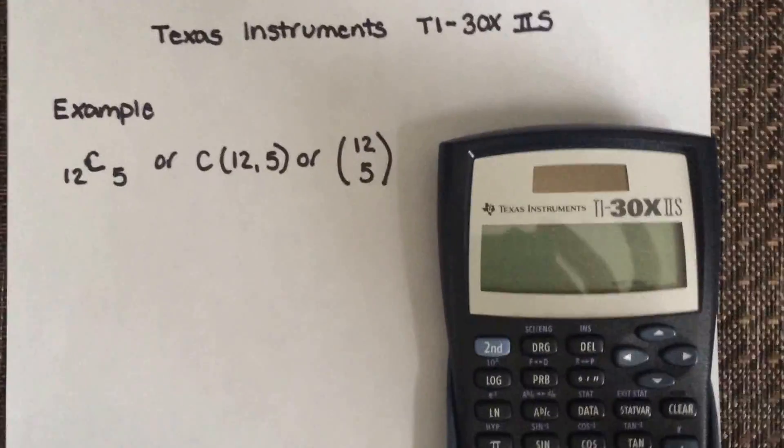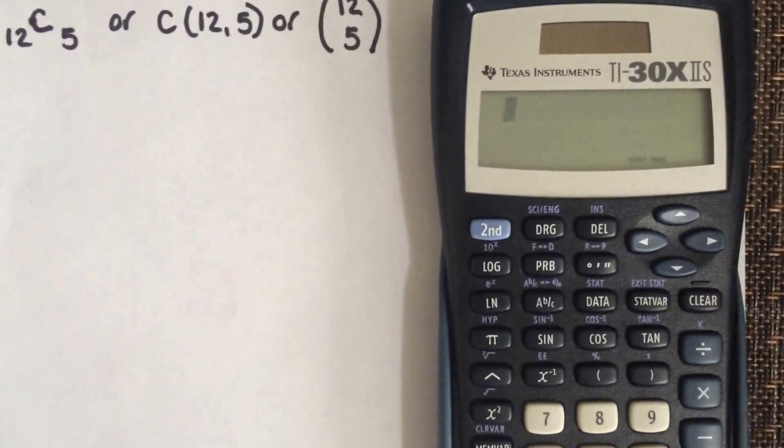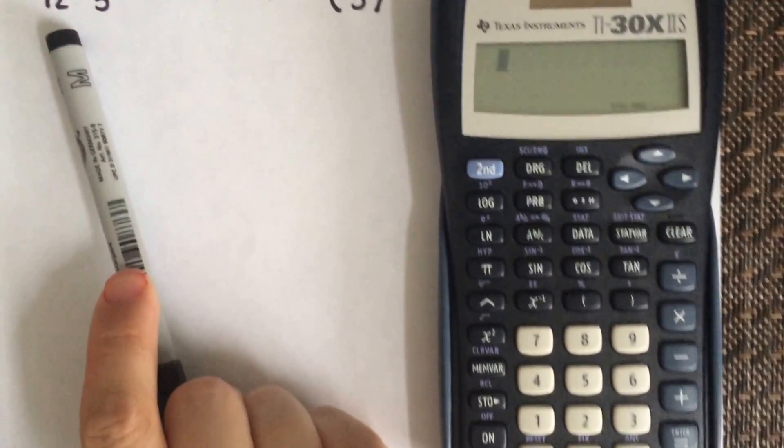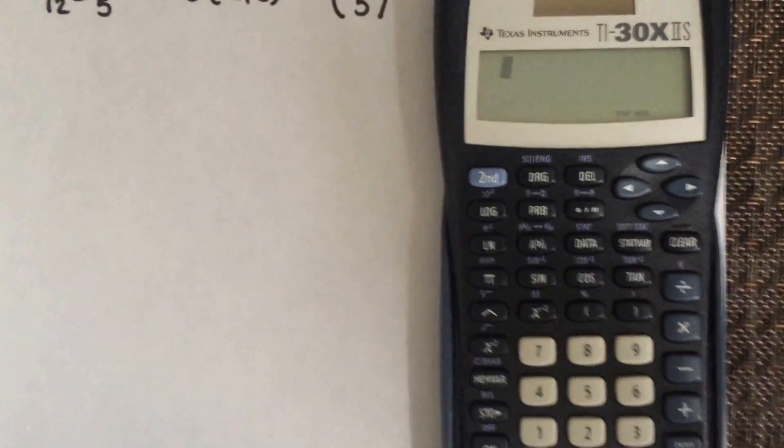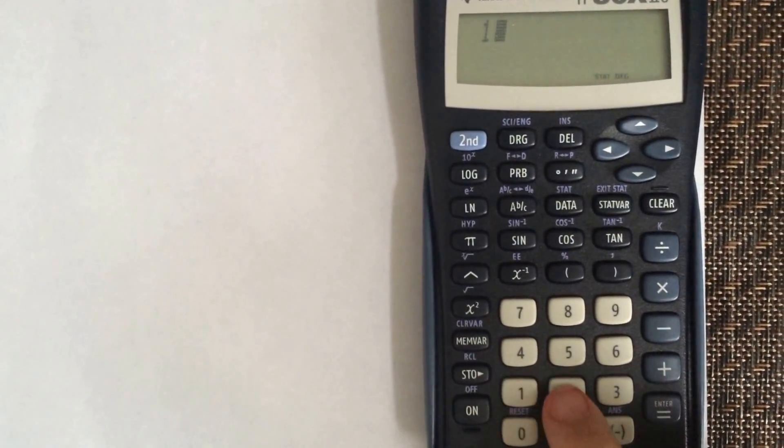The first thing you're going to do on your Texas Instrument is select the first value. So you're going to enter 12 because that's how much you're choosing. Go to your calculator and enter 12.